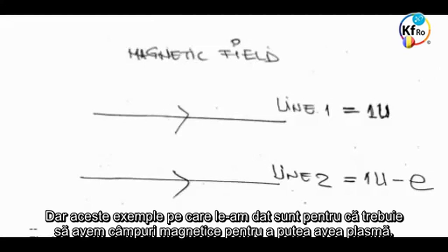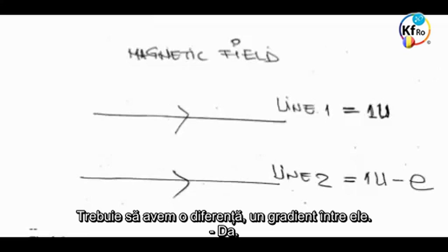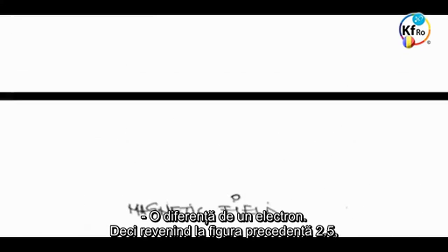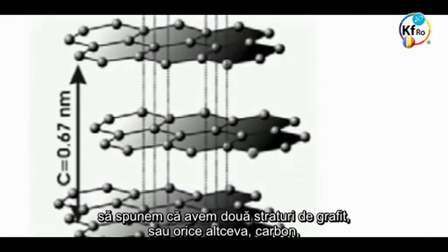I understand, but this example I was giving is that if we have two magnetic fields in order to have a plasma, we need to have a gradient difference between them with the amount of electrons.